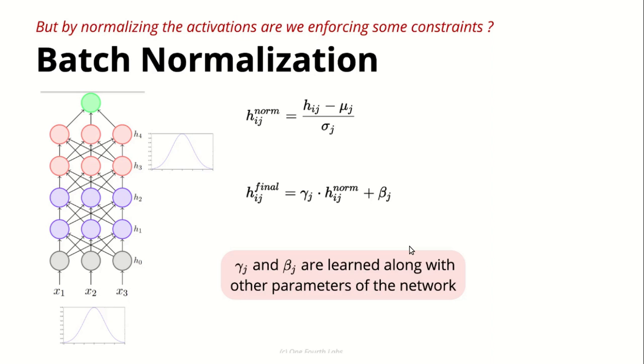Let's see what these parameters are. Let's say that gamma becomes sigma_j and beta becomes mu_j. Let's say these are the trained parameters that we're going to learn with the training.